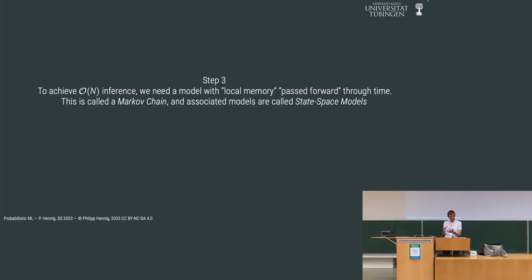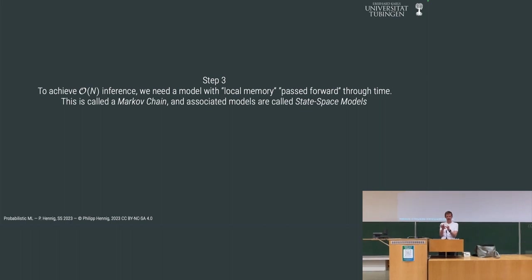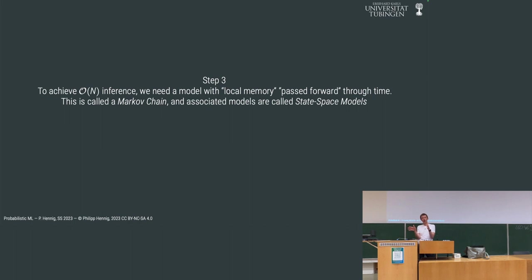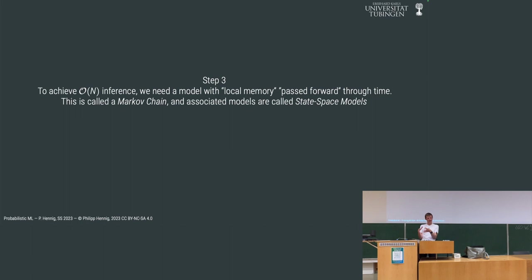That thing which we would like to keep track of and see change across time will always have to be something finite, and something that does not grow as we get more data. Because if it does, we won't have O(N) inference — the cost of each step will keep growing. So the object we're going to hand around is some kind of memory, some finite thing that we hand from one time step to the next.